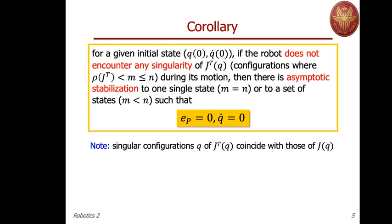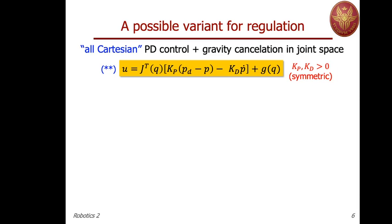There is a possible variant for regulation: we could define the PD control law in an all-Cartesian way while still doing gravity cancellation in the joint space. The following controller is as before, but now we damp the Cartesian velocity ṗ with a different gain Kd — still positive definite, symmetric, and typically diagonal — and then convert the sum of proportional and derivative terms by the Jacobian transpose to generate a torque, while gravity cancellation occurs in the joint space.